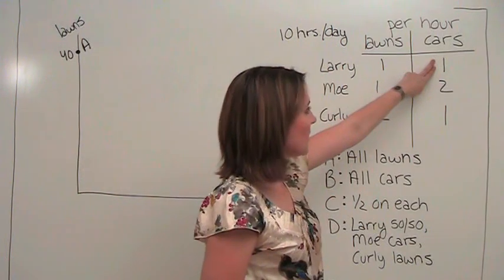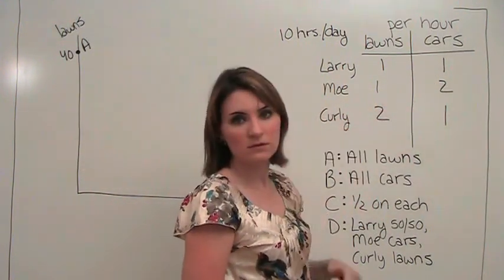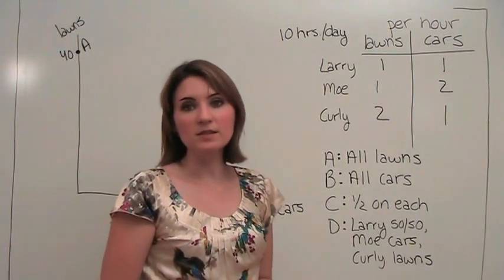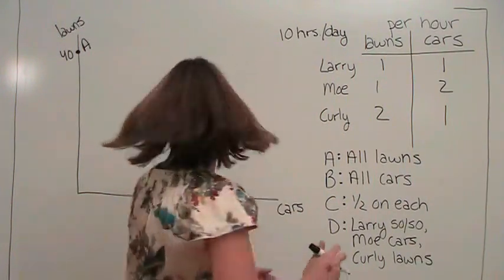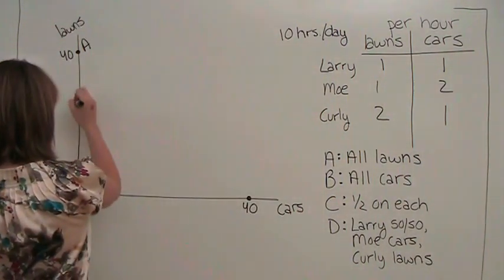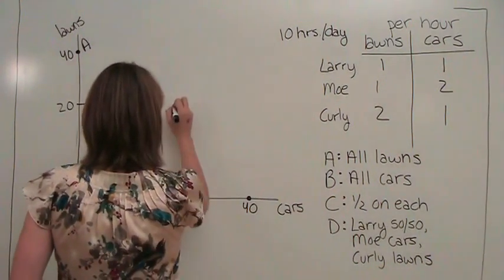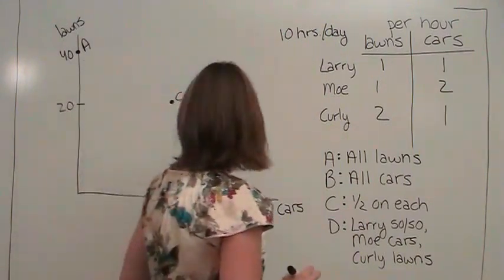Similarly, five cars, ten cars, five cars, for a total of twenty cars, which gives us the point twenty-twenty on our production possibilities frontier. So now we have point C.